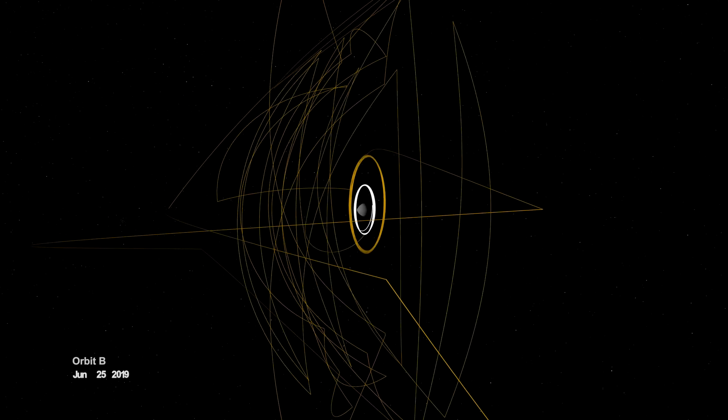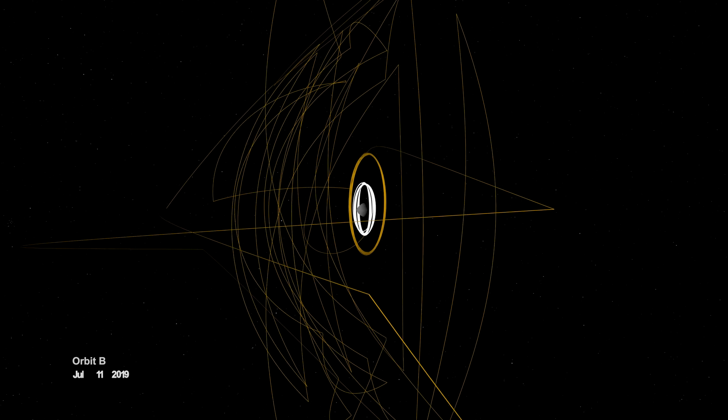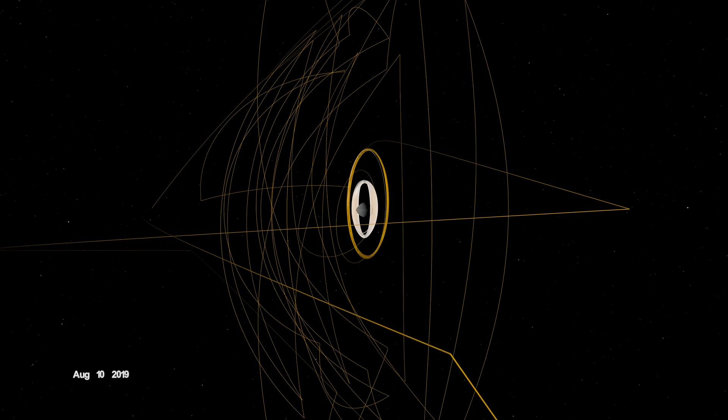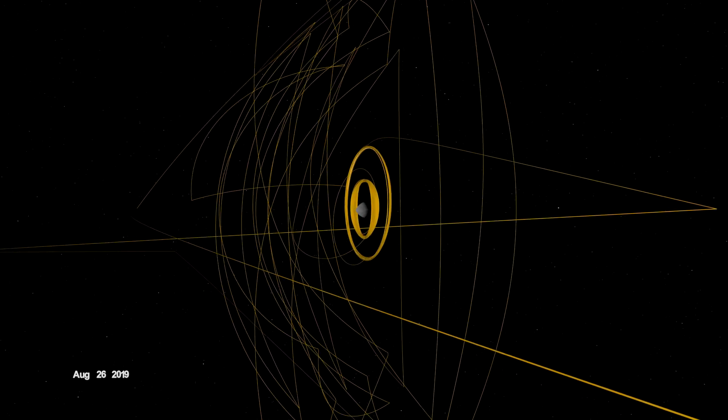On June 12, the spacecraft entered a new orbit at an altitude of just 680 meters, setting another record and establishing a home orbit for the remainder of the mission.